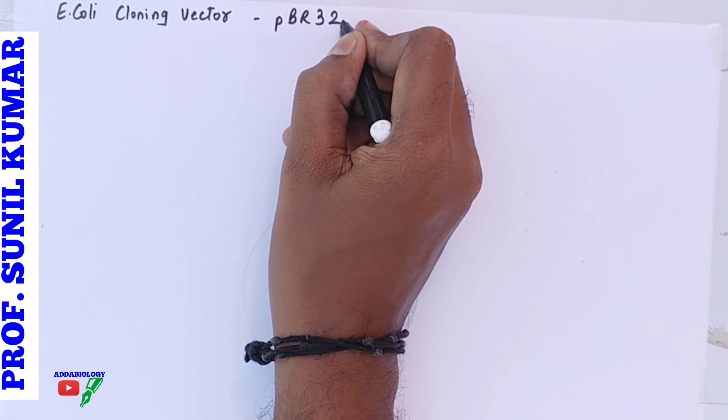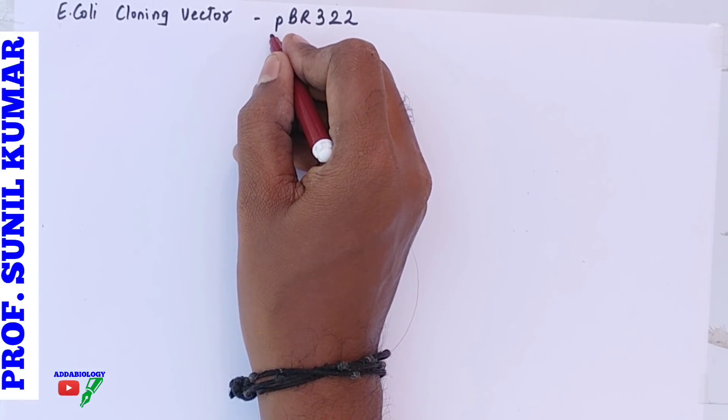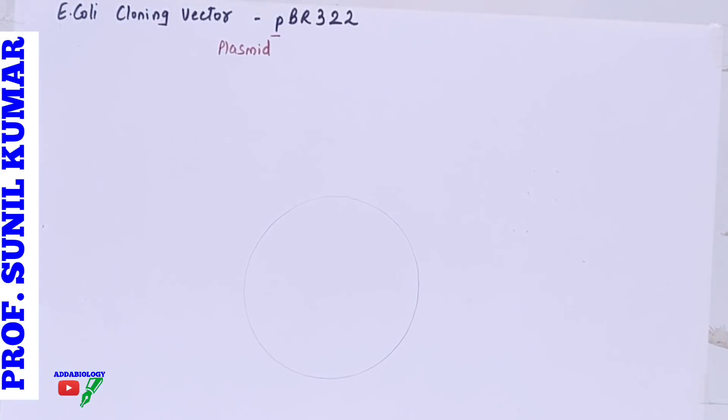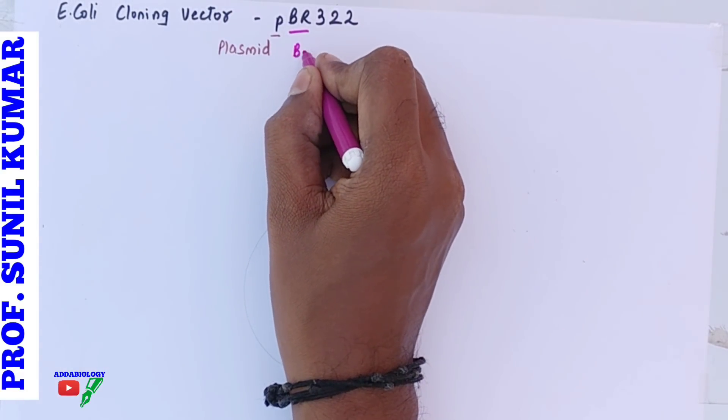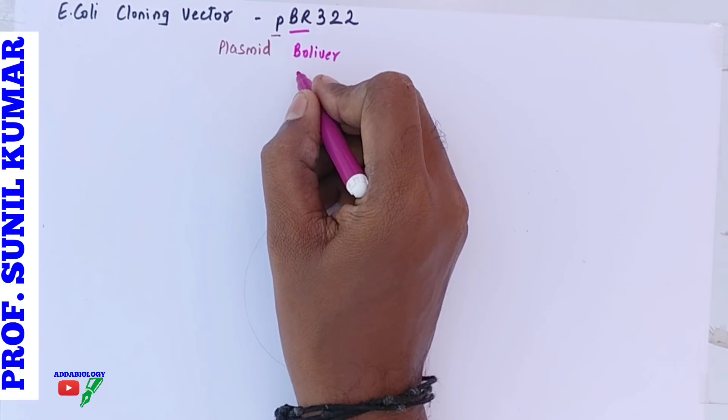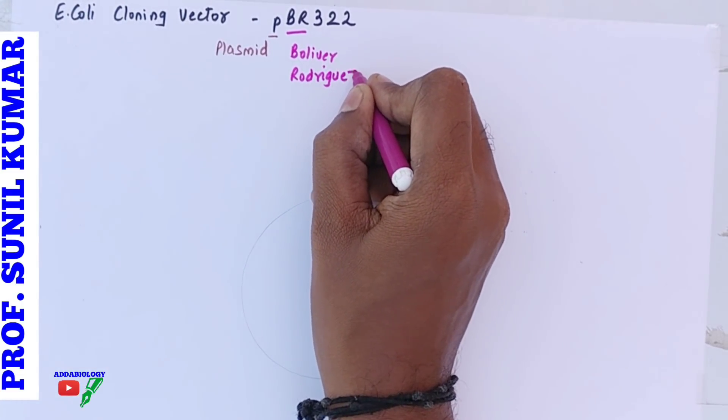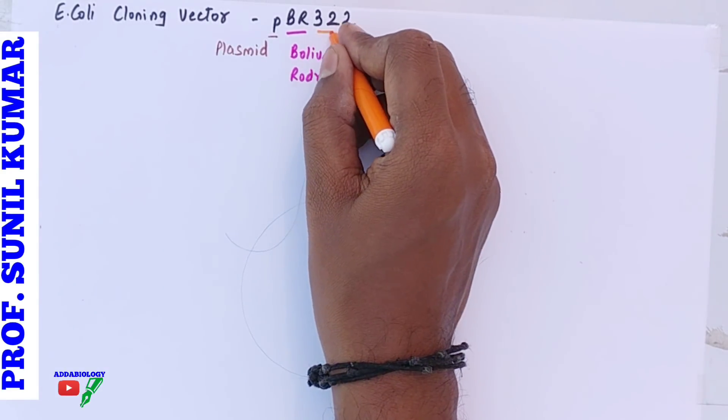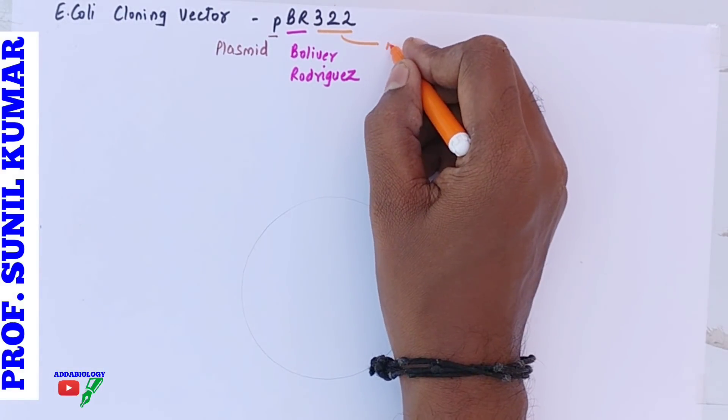Here we are talking about plasmid, the E. coli cloning vector pBR322. When I use the word p, it's a small alphabet indicating plasmid. B and R is the name of the scientists who came up with this pBR322 - Bolivar and Rodriguez. 322 is the number given by the workers.